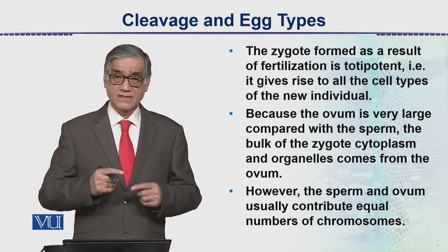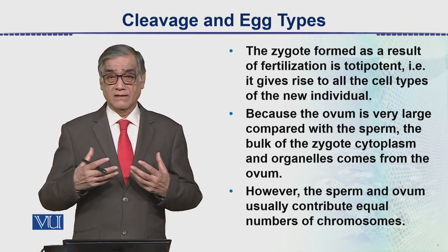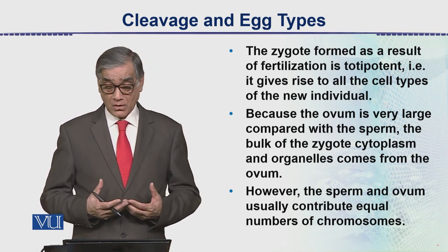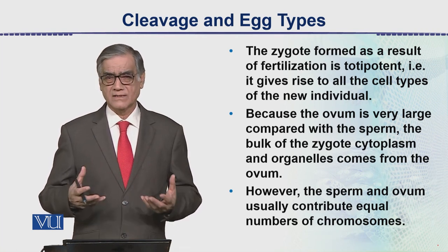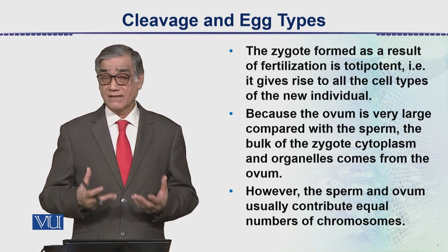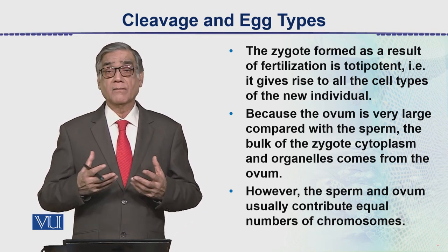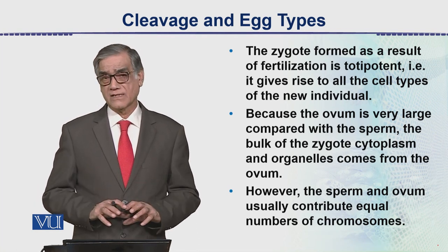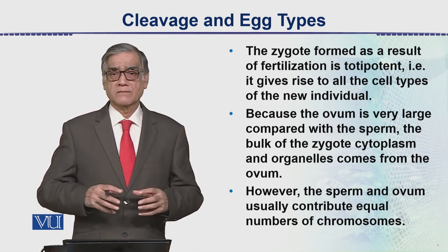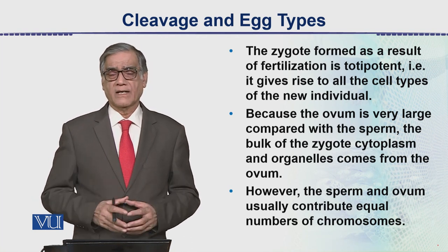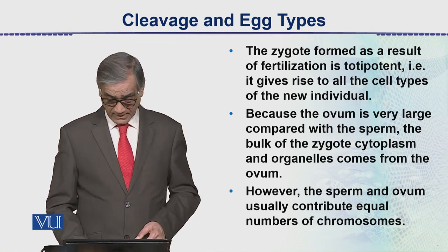The process of cleavage always starts after fertilization. Now the egg is large compared to the sperm, and inside it there is cytoplasm and all the organelles that are in addition to normal cells, and it also contains proteins — they are specialized types of proteins. The sperm and ovum contribute equal numbers of chromosomes, but only the chromosomal contribution is the same; the cytoplasm contribution is different, because the cytoplasm in the sperm is very less, while in the egg there is quite an appreciable amount of cytoplasm containing so many substances.